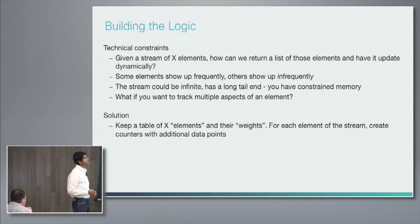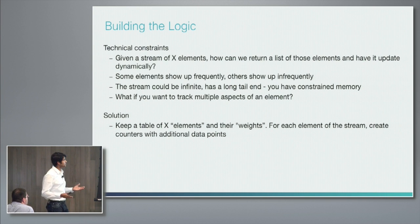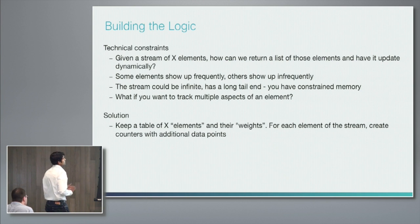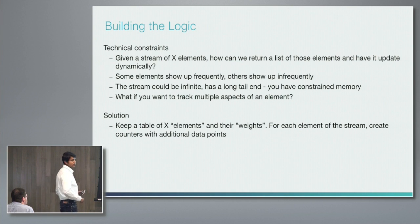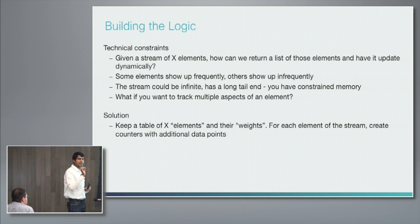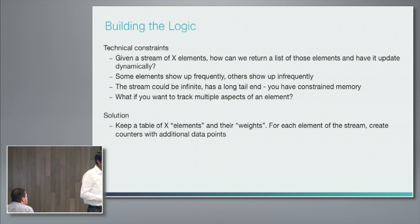When trying to capture a very long tail of apps with limited memory — because all processing is done at the edge — there are a number of technical constraints. You have a stream of X elements: thousands, tens of thousands of websites and apps. How can you give a list of those elements and have it update dynamically? Some elements show up very frequently, others infrequently. The stream could be infinite — with hundreds of users accessing dozens of applications, you have a very long stream of elements. How do you factor all that in with limited memory?